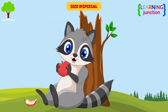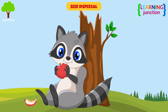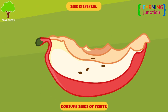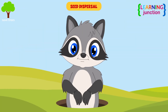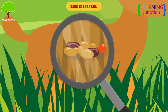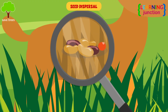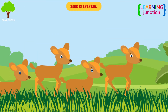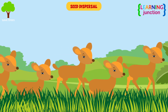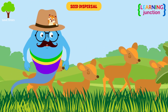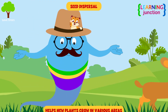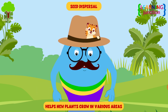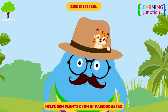Seed dispersal. Many animals, like raccoons, consume seeds of fruits and defecate in another location where they move. Seeds may get caught on the fur of animals, and he will transport them to other areas.